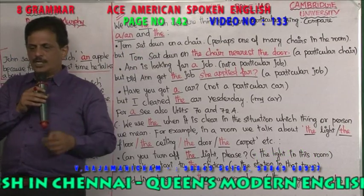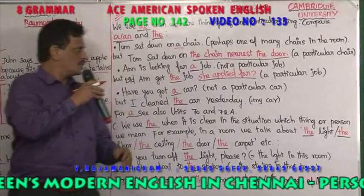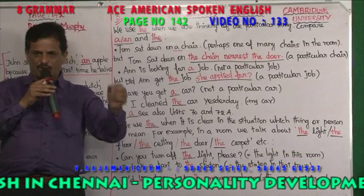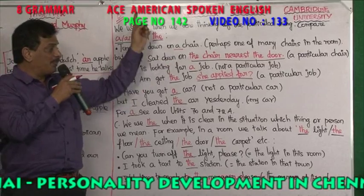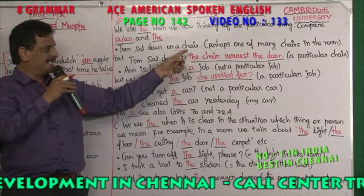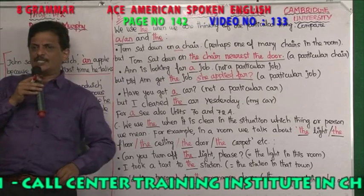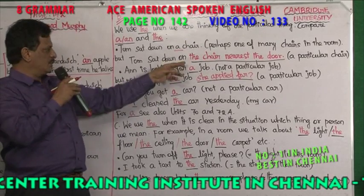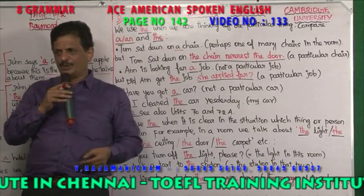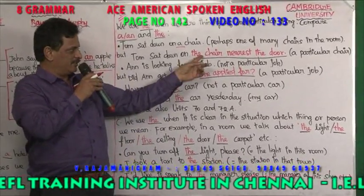Tom sat down on a chair — that was one of many chairs in the room. Ten chairs are there; he sat on a particular chair. But Tom sat down on the chair nearest the door. So many chairs are there, but one particular chair which is nearer to the door — 'the chair'. Tom sat down on the chair nearest to the door. Whichever the chair is, that particular one near the door — there you are using 'the chair'.